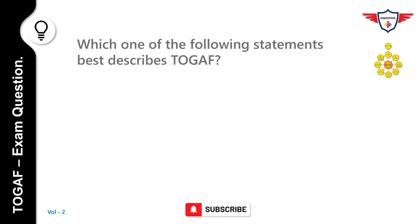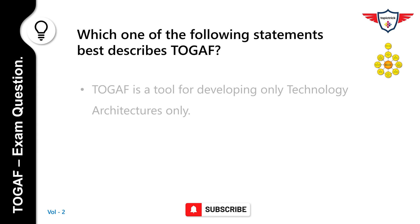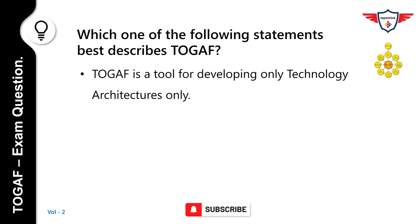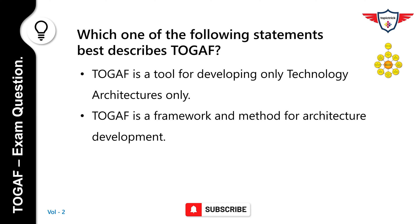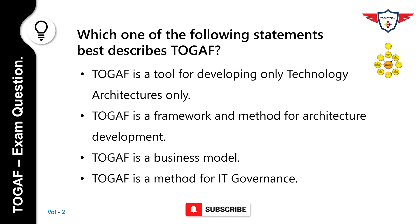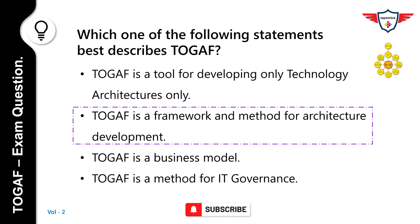Which one of the following statements best describes TOGAF? Options: TOGAF is a tool for developing only technology architectures; TOGAF is a framework and method for architecture development; TOGAF is a business model; TOGAF is a method for IT governance. The correct answer is: TOGAF is a framework and method for architecture development. TOGAF is both an architecture framework and a method for architecture development — a tool for assisting in the acceptance, production, use, and maintenance of enterprise architectures.